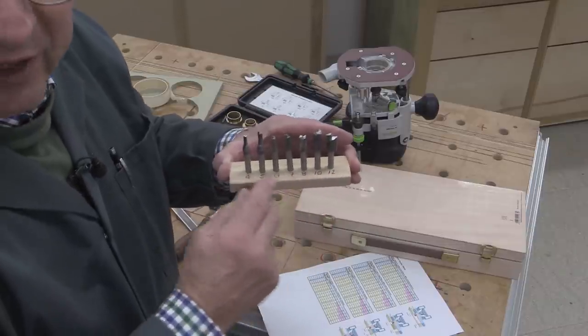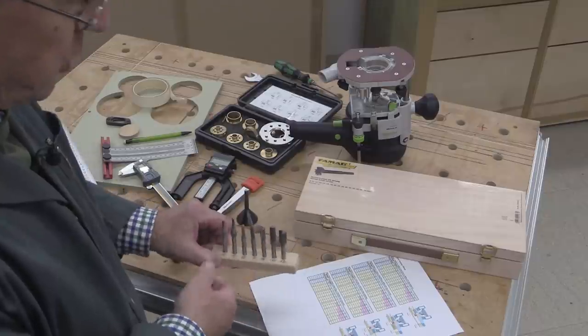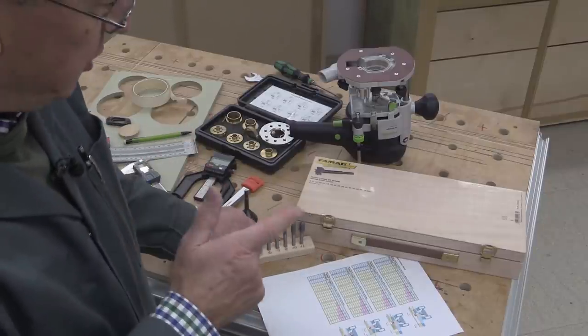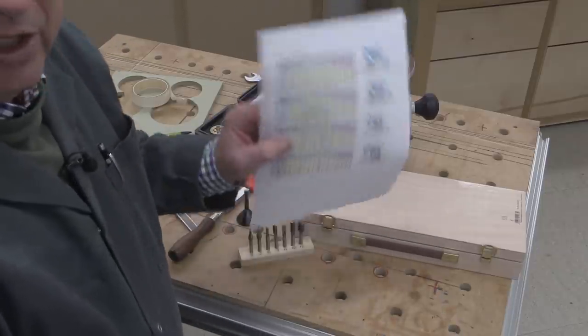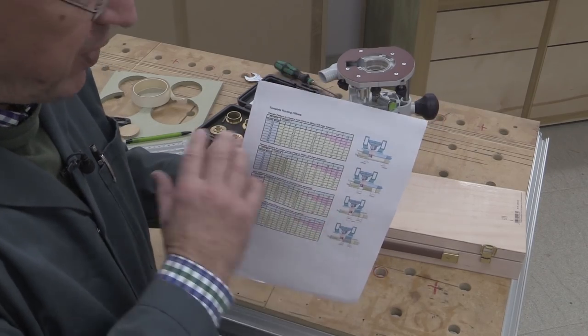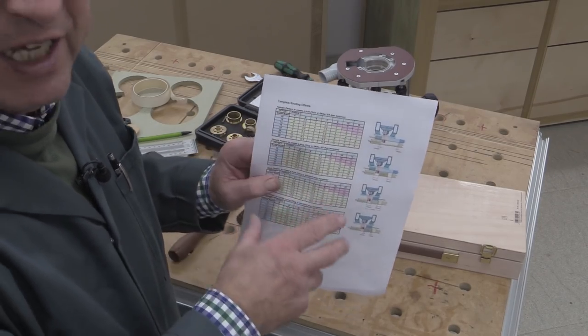And that gives me quite a bit of flexibility together with the eight guide bushes that I've got that go from 10 to 30 millimetres. I've got my crib sheet, which I've made up, which tells me offsets for various combinations of guide and router cutter.